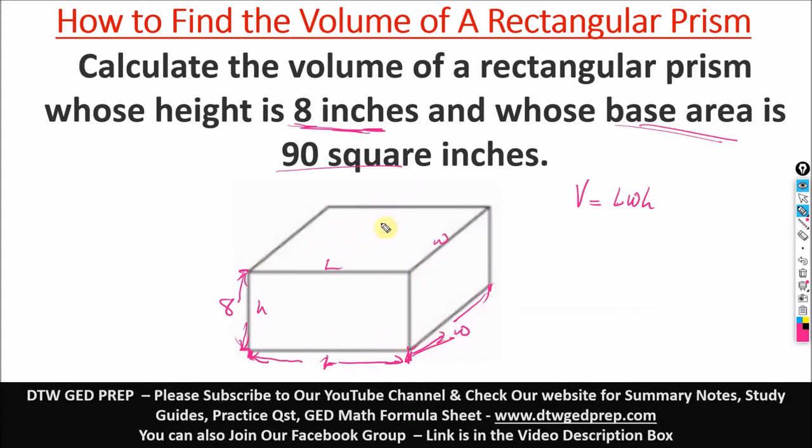Remember, a rectangular prism has two bases - one base at the top and one underneath. This base we can see fully.